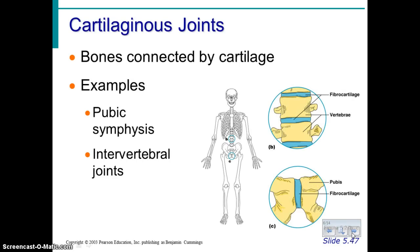Our next example will be cartilaginous joints. These are basically bones that are connected by cartilage. We see this between the vertebrae of the spine, and again between the two pubic bones in the pubic symphysis.